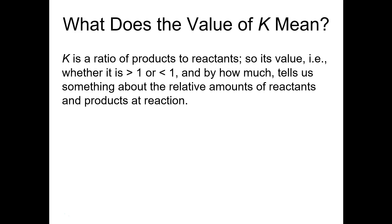Let's start by talking about what the value of K means, and what are the possible values of K. It can't be negative because you can't have a negative concentration. It can't be zero because at equilibrium you're going to have some concentration of everything, which also means it can't be infinity. So it's going to be some value between zero and infinity.